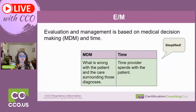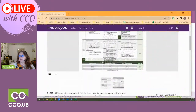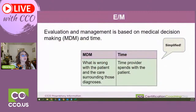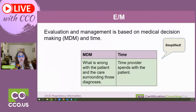There's a lot we can talk about. If you open up the MDM office matrix, the leveling paperwork can get difficult looking at it. I use a free one on cco.us — just go to the freebies and you'll find it there. Your encoder may have one as well, but they're all the exact same information. Let's boil it down to the simplified version of how we do E&M now.